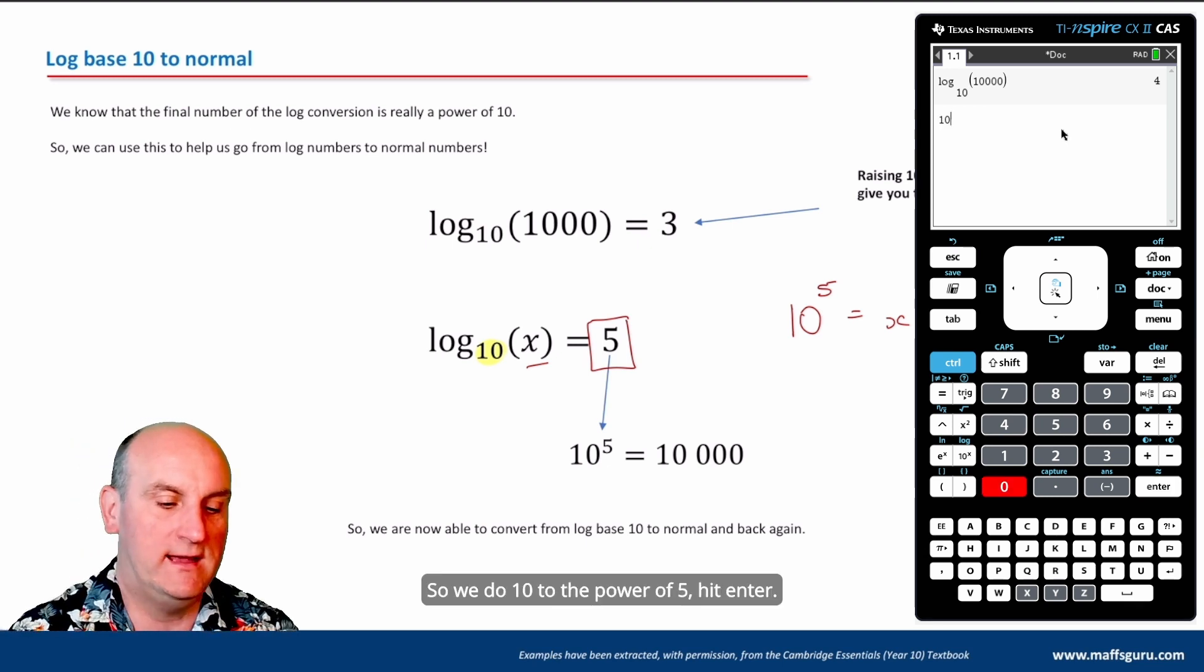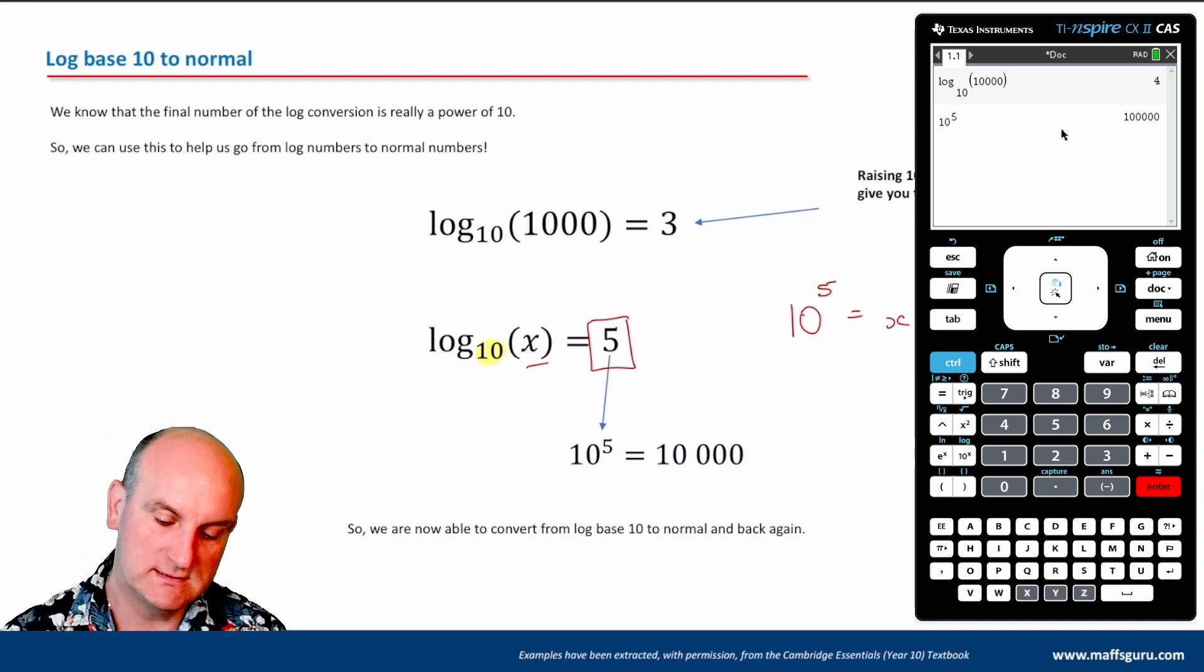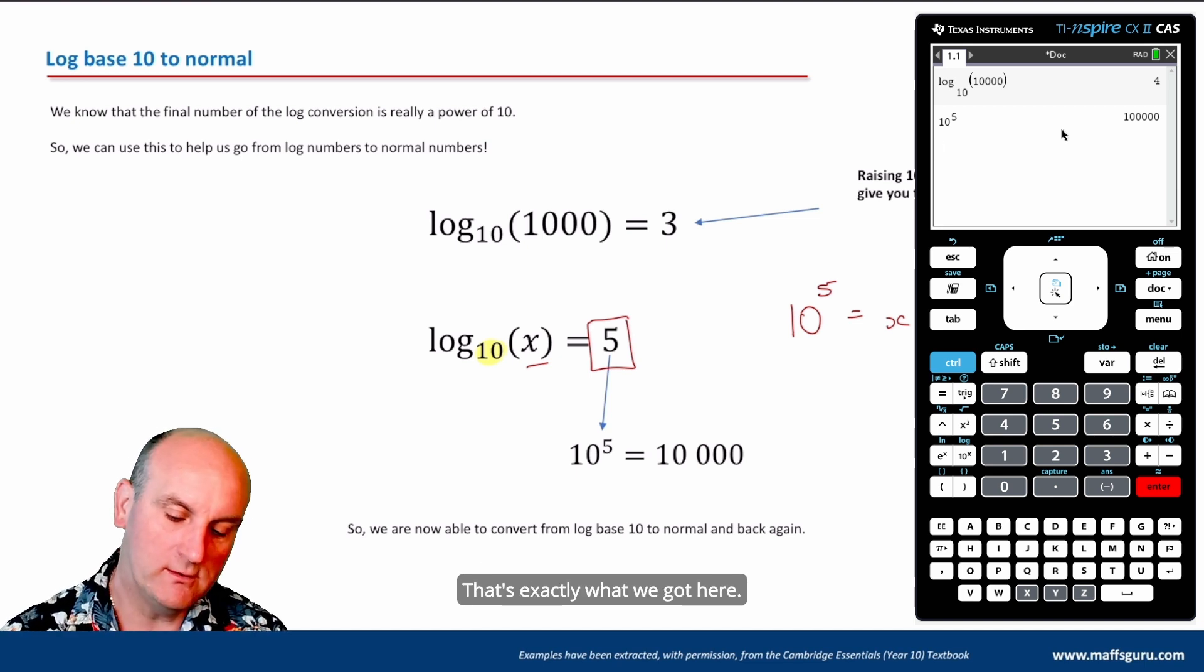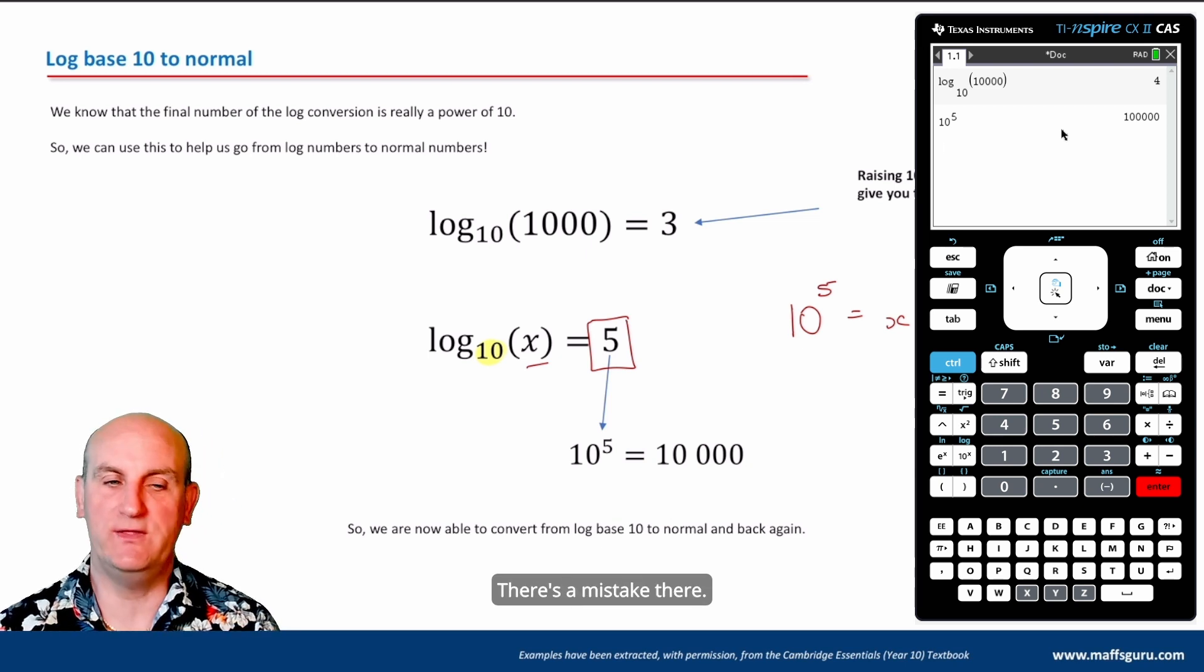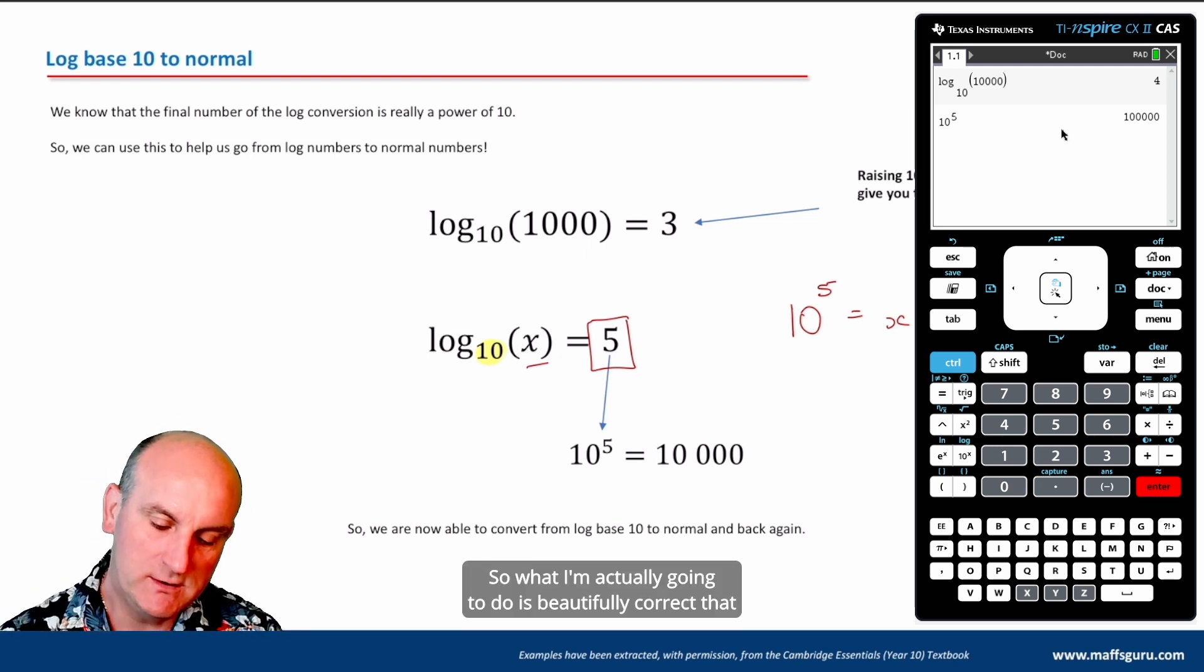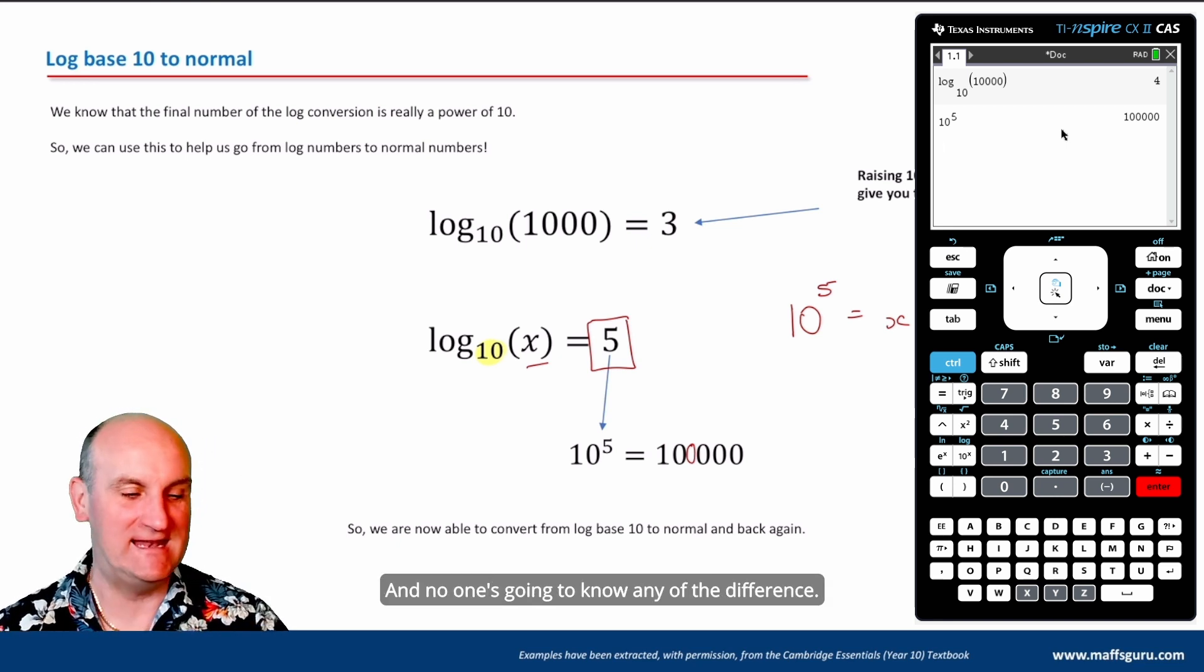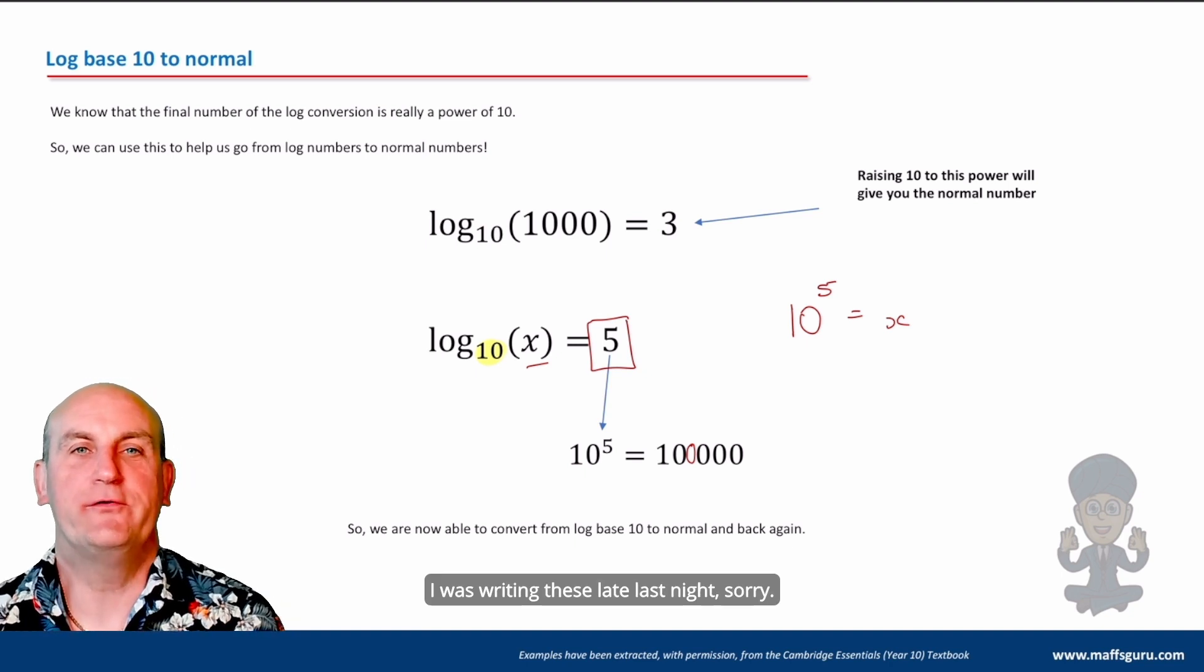Let's do that. So we do 10 to the power of five, hit enter. And what do we get there? We get 100,000. There's a mistake there. So what I'm actually going to do is beautifully correct that by putting a zero in there. And no one's going to know any of the difference. I was writing these late last night. Sorry.